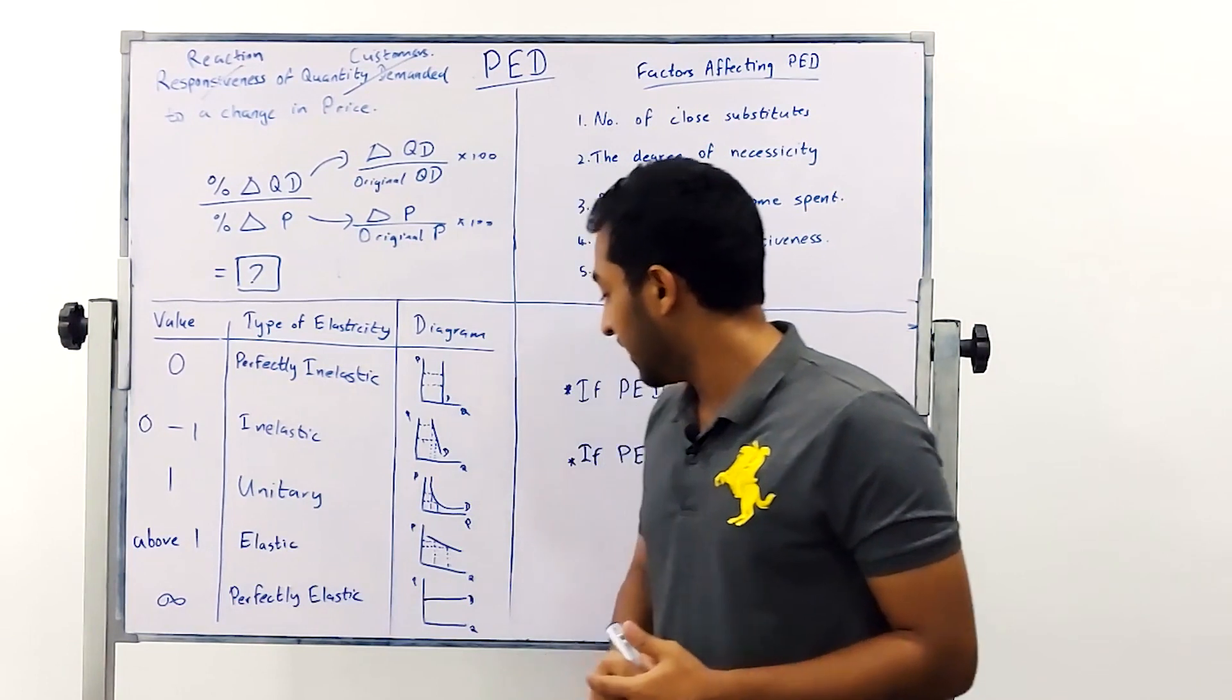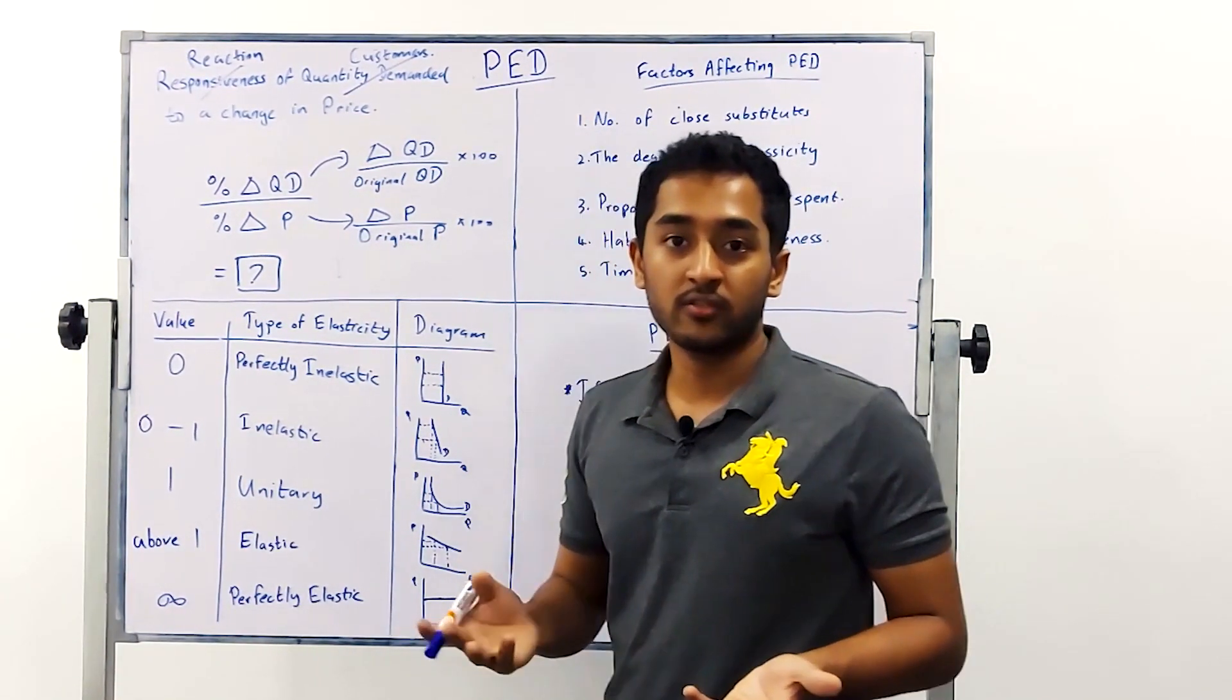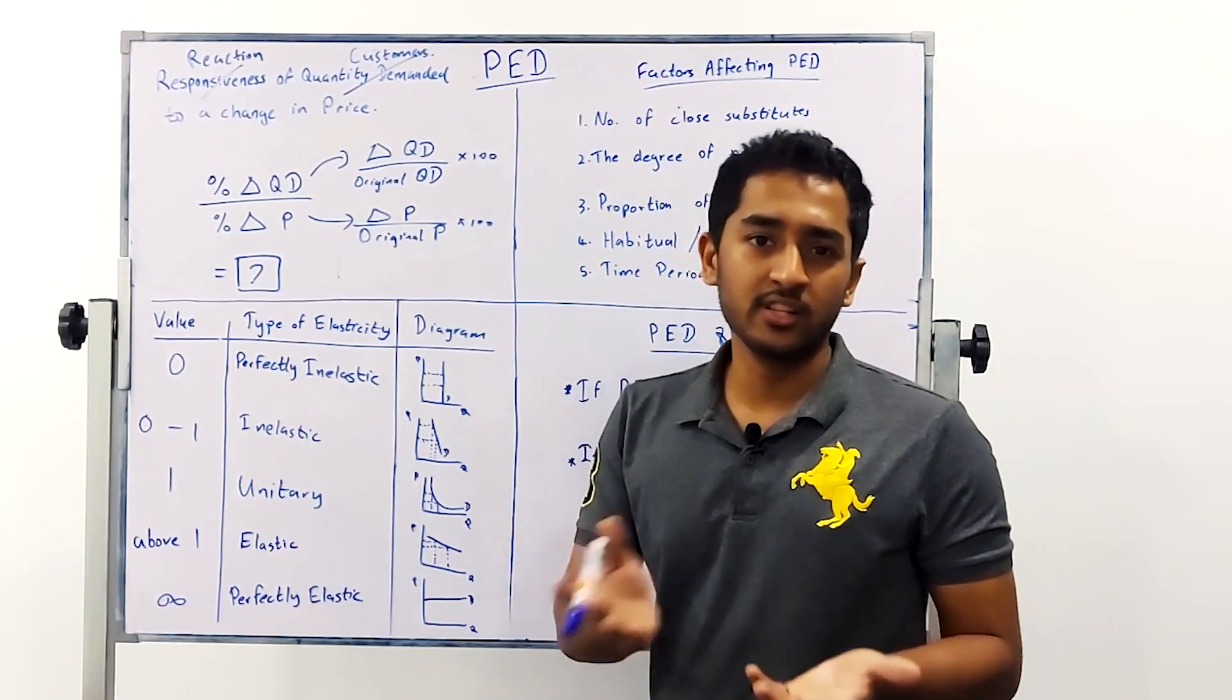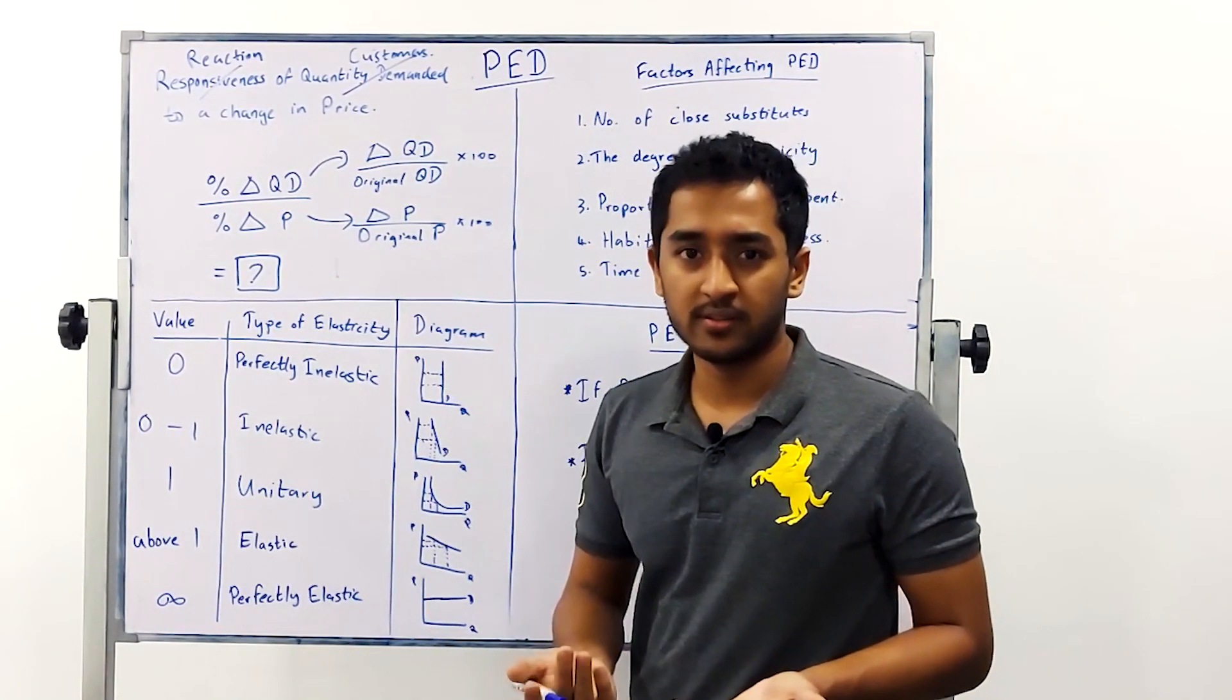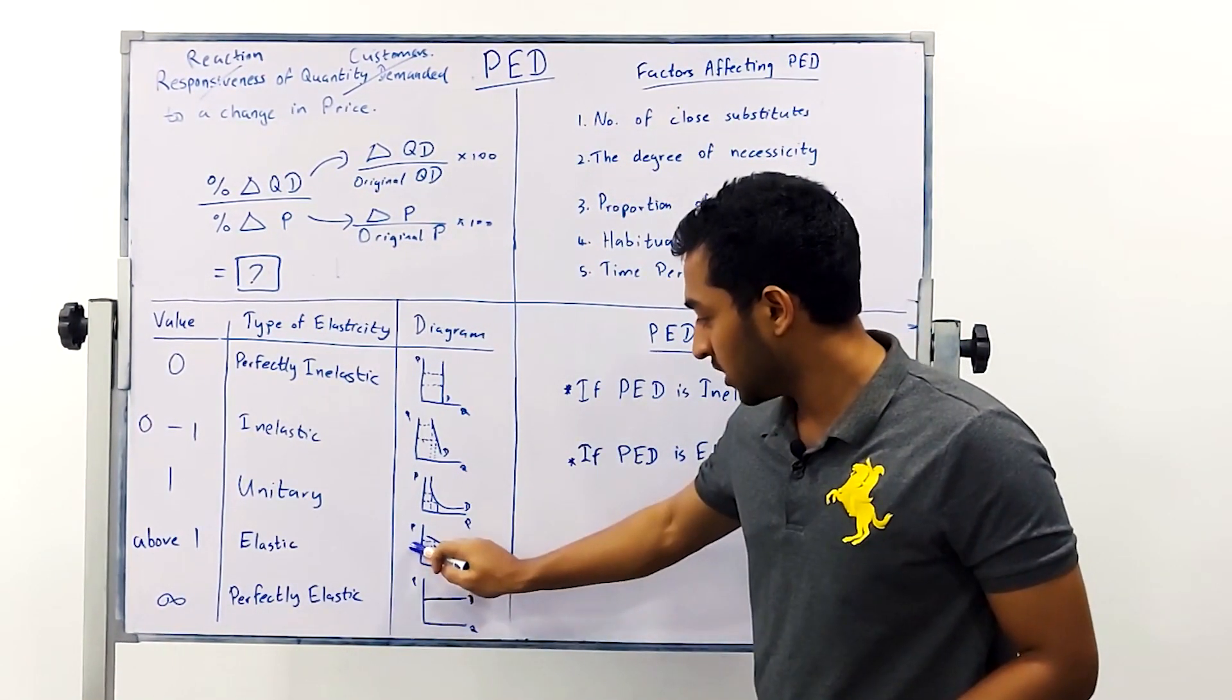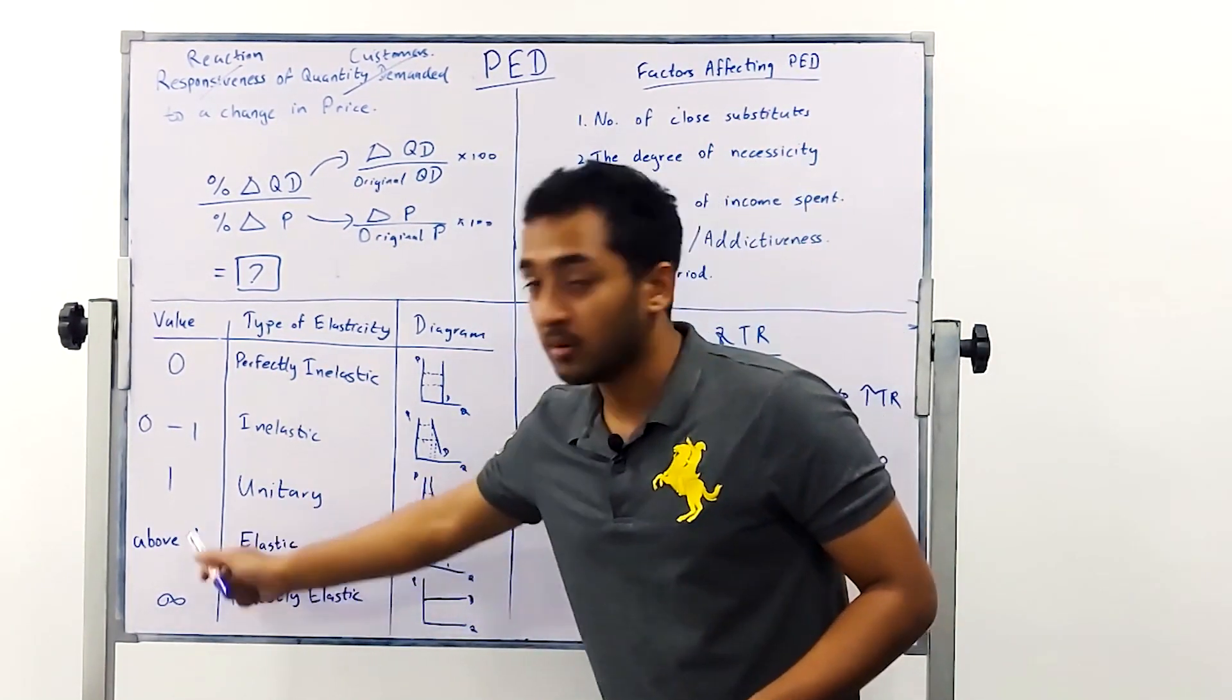If it is above one it's considered elastic. Elastic goods are those with a lot of competition which means consumers will very easily switch to a different product if you raise your price and that's why the curve will look like this. A small change in price here will lead to a fairly large change in quantity or a quantity above one.